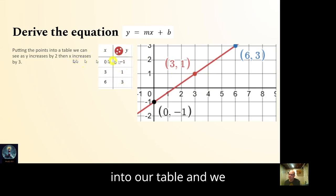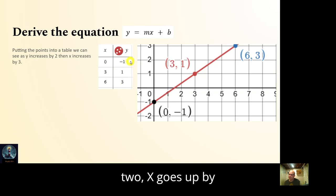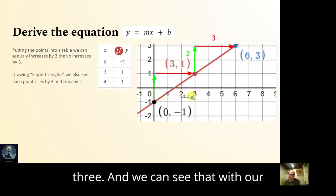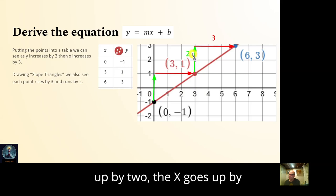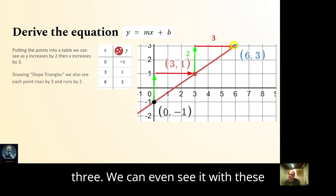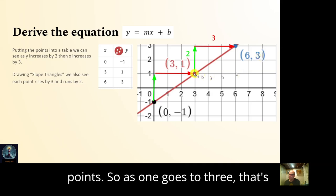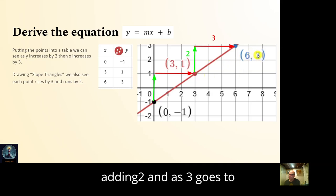We can see that as y goes up by two, x goes up by three. We can see that with our slope triangles as well — y goes up by two, x goes up by three.